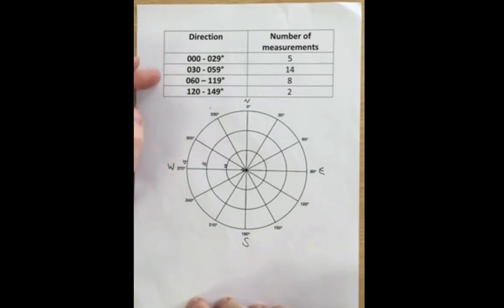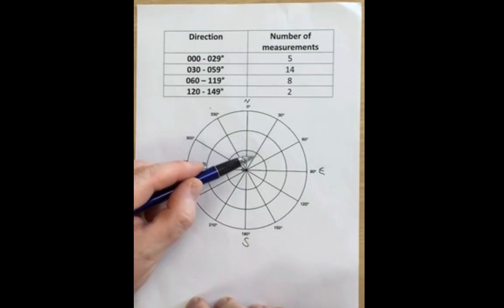For this example, you can see between zero degrees and 29 degrees, we have five measurements. Zero degrees is due north. 29 degrees takes us up to the first of these radial lines here.